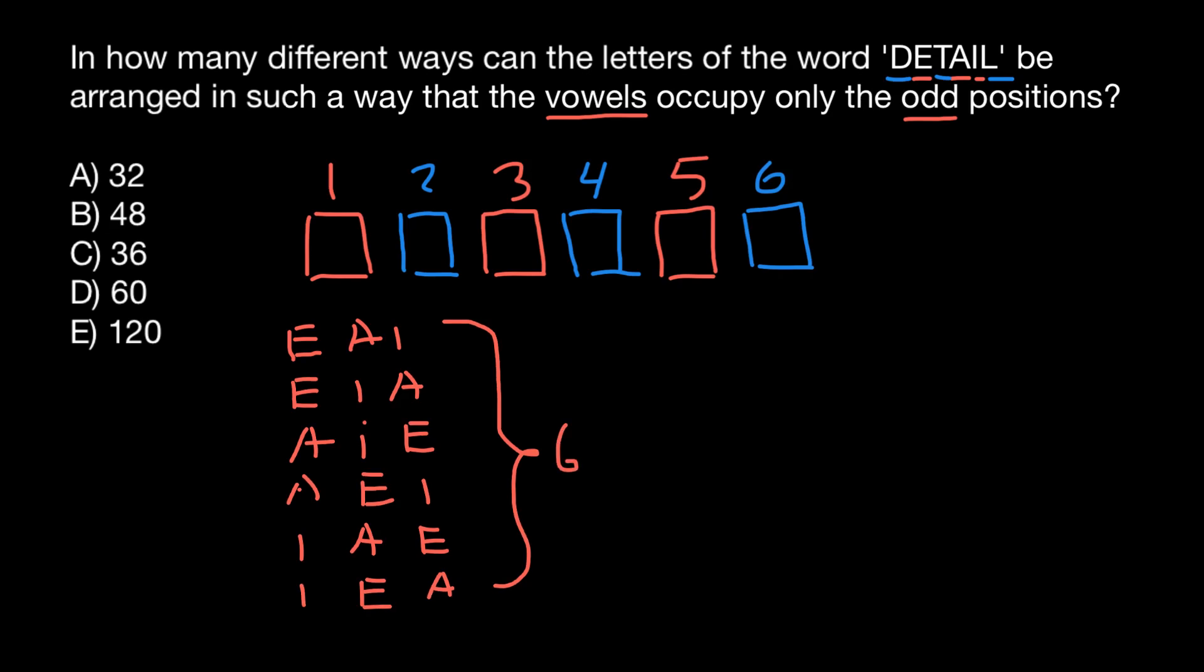Now let's check how many combinations we can get with consonants. We have the following letters: D, T, and L. This is going to be the first combination, then D, L, T. Next combination would be T, L, D, then T, D, L, then L, D, T, and L, T, D. As you see, again, we have six combinations.